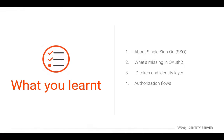Now we have come to the end of the training video. Let's have a quick recap of what we learned. First, we got a brief introduction to SSO. Next, we discussed why we cannot solely use OAuth for authentication. Then we learned about the ID token and the identity layer introduced in the OIDC protocol. Finally, we got an overview of the OIDC protocol and related specifications.